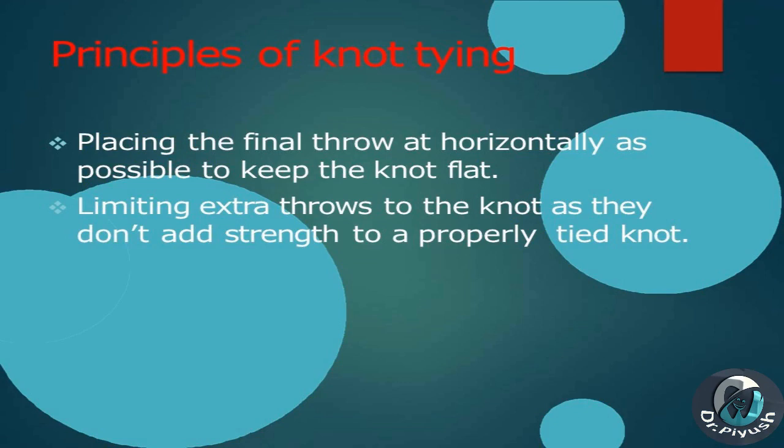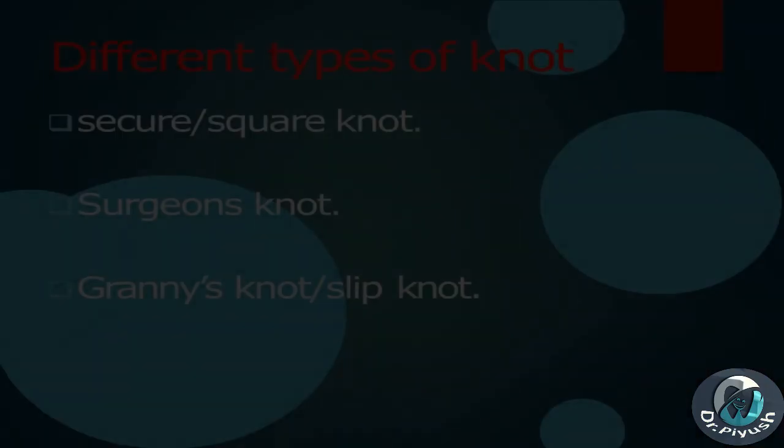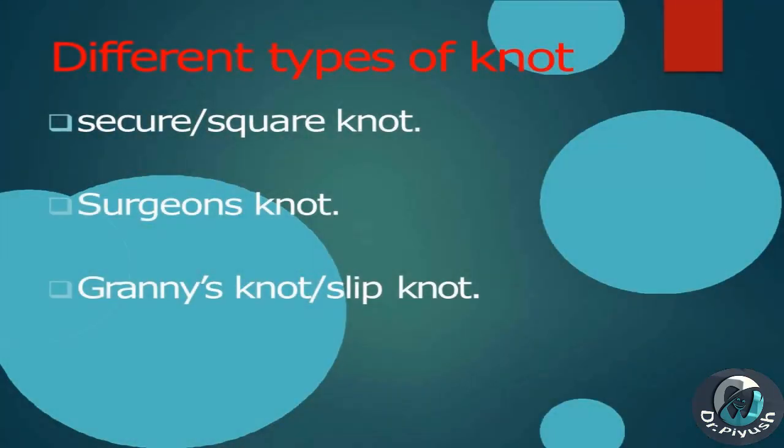Further principles of knot tying: place the final throw as horizontally as possible to keep the knot flat; limit extra throws as they do not add strength to a properly tied knot. Different types of knots: secure/square knot, surgeon's knot, and granny's/slip knot.